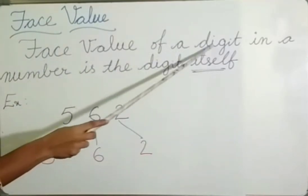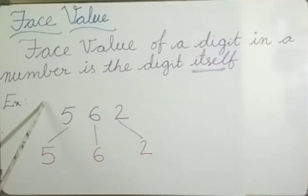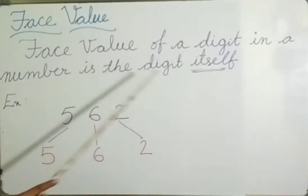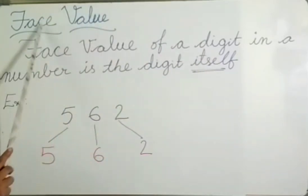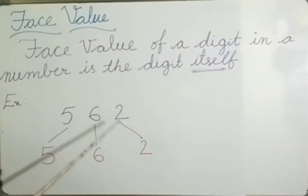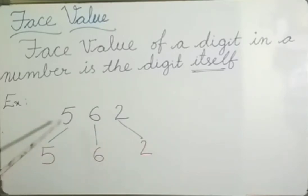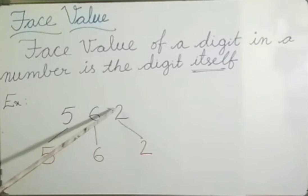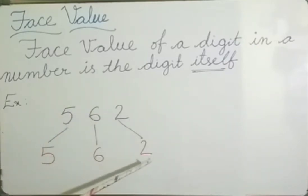Face value of a digit in a number is the digit itself. The digit itself is its face value. For example, take 562. The face value of 5 in 562 is 5. The face value of 6 in 562 is 6. The face value of 2 in 562 is 2.